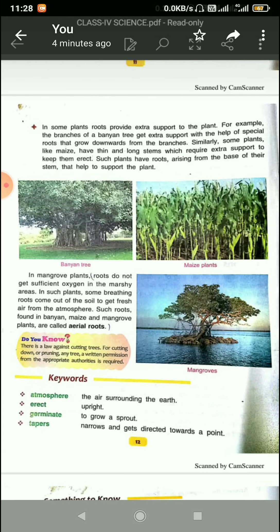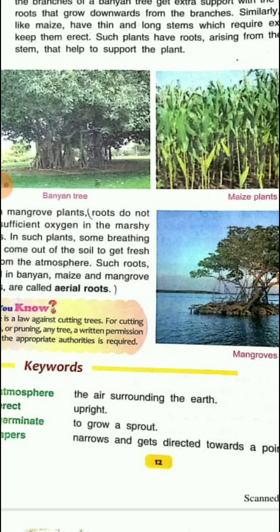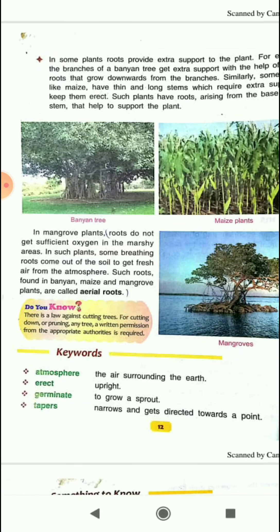Then, in mangrove plants — mangrove plants live in marshy areas where they cannot get sufficient oxygen. So they develop breathing roots to get fresh air from the atmosphere. Such roots found in banyan, maize, and mangrove plants are called aerial roots. Aerial roots that grow upward outside the soil help the plant get fresh air.